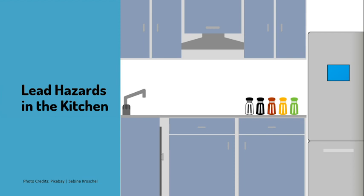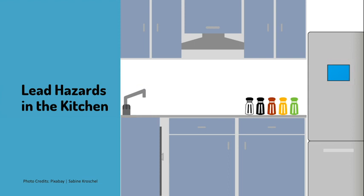Lead hazards in the kitchen. There is an image of a kitchen equipped with a stove, a sink, a refrigerator with an ice maker, a countertop, and cabinets with spice containers. The faucet, spices, and ice maker are highlighted as potential lead hazards. Any source of water can be a source of lead exposure if lead pipes are in the home. If water is contaminated with lead, then not only is the water from a refrigerator contaminated, but so is the ice it creates. Lead is sometimes used to enhance the color of spices like turmeric or to weigh them down to increase profits, so it is important to research spice brands prior to purchasing.